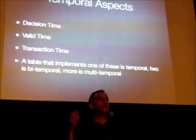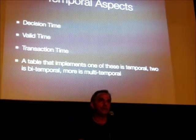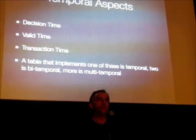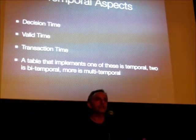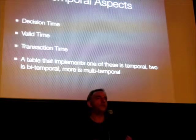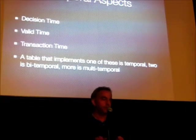A table that supports one of these is called a temporal table. A table supporting two is called a bi-temporal table. More than two is multi-temporal. You don't normally go further than two because you start twisting things up into all kinds of problems.